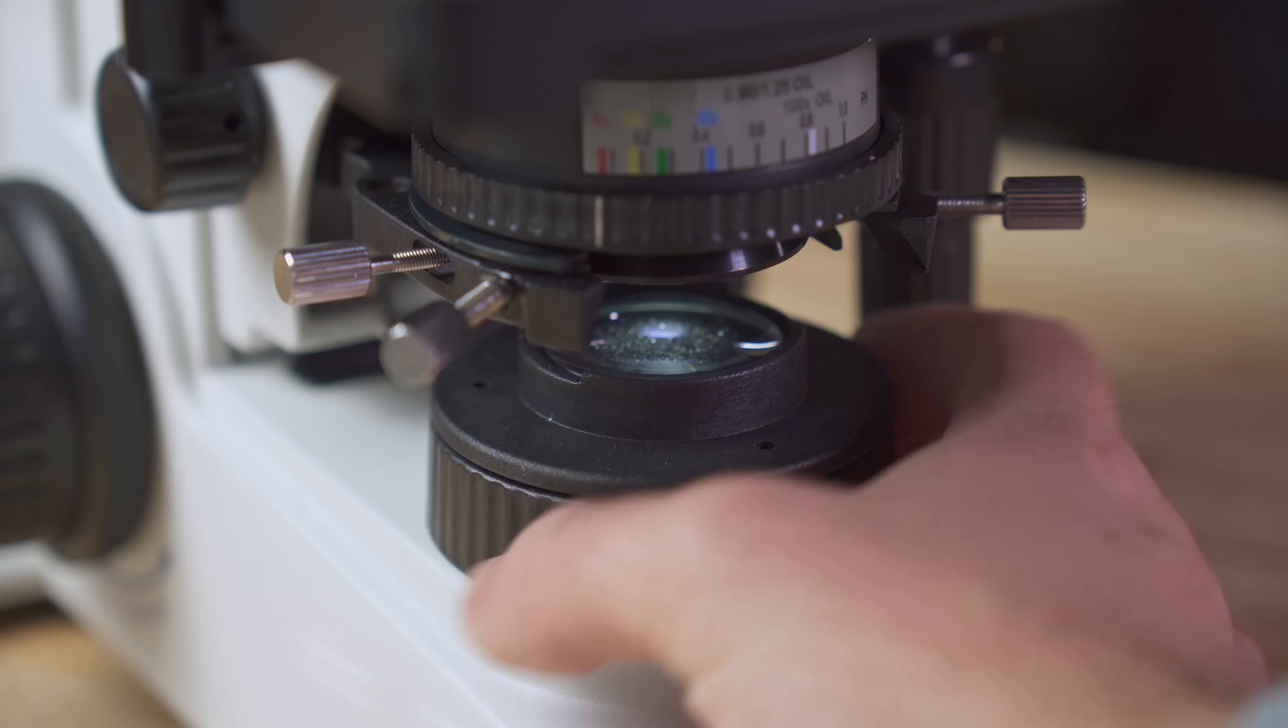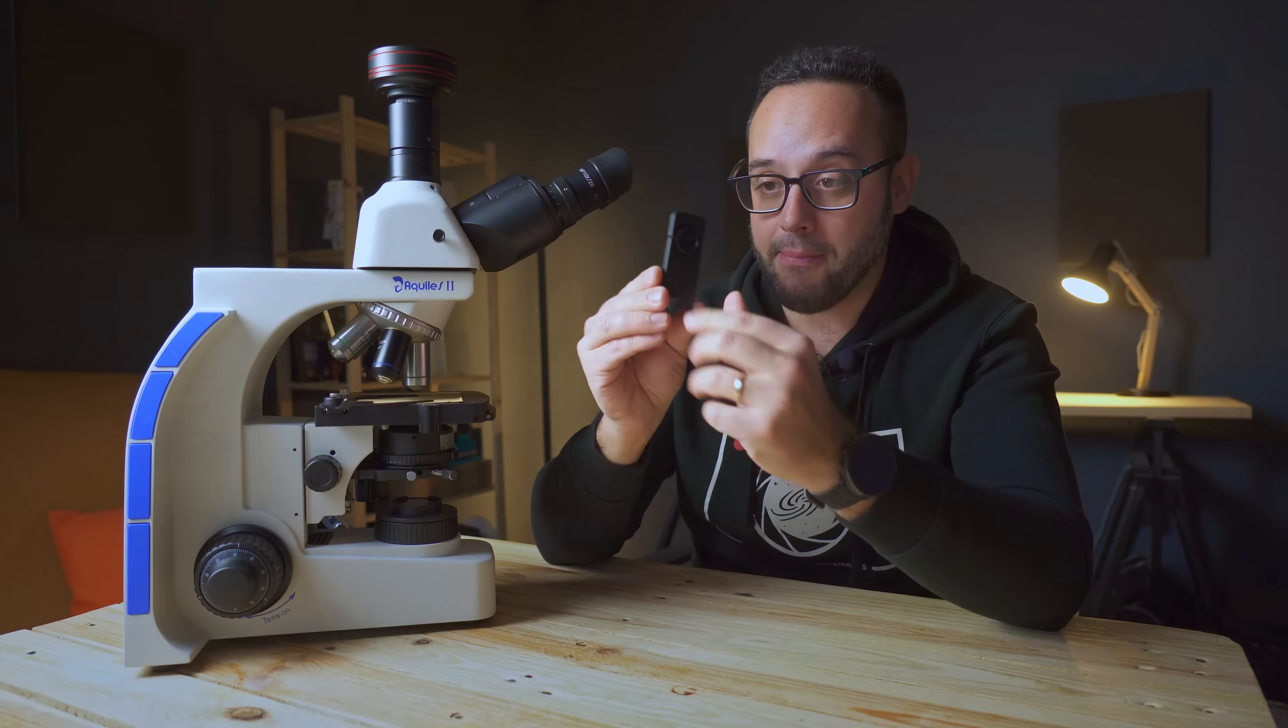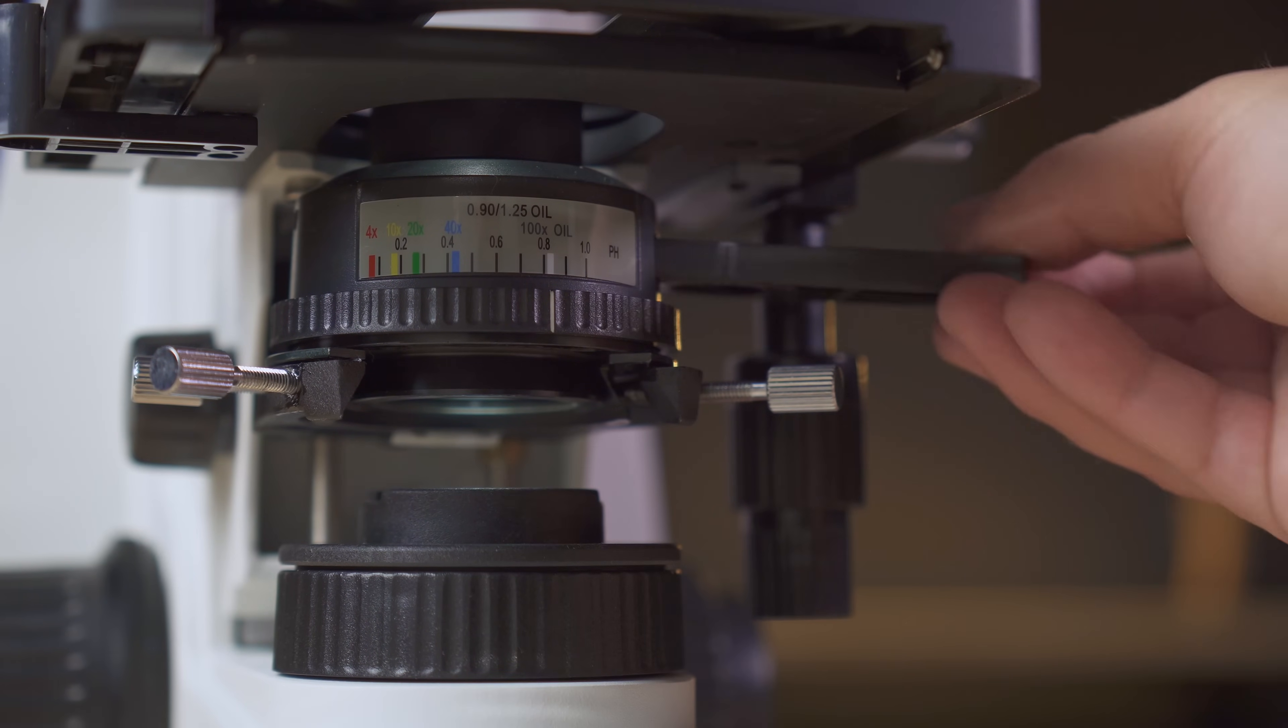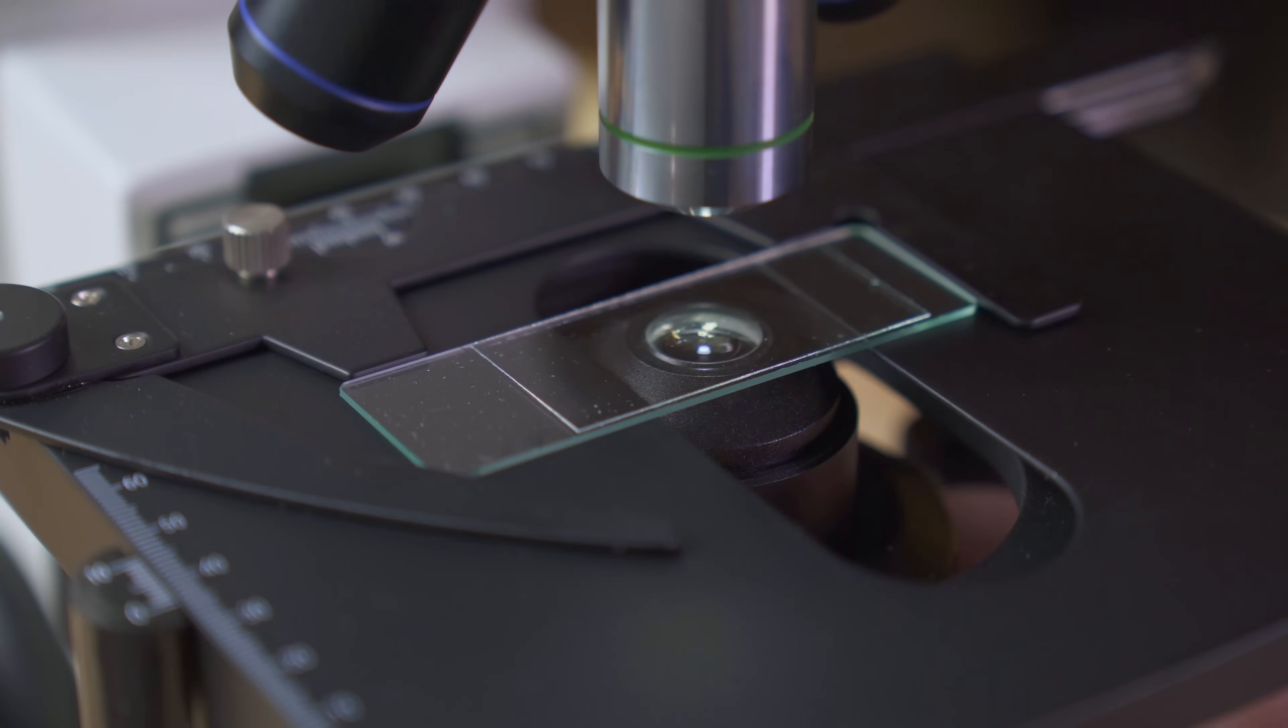And basically we are going to achieve this simply by making the main light of the microscope hit the phase condenser and using these slides that I have here, which basically will allow us to break the light beam and redirect it obliquely to the sample.